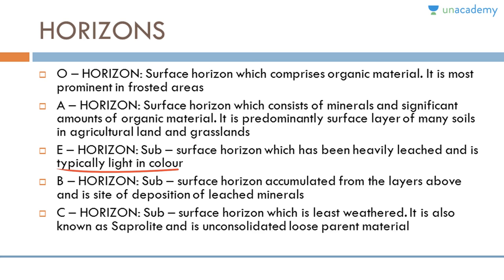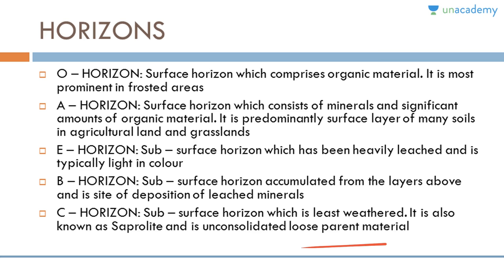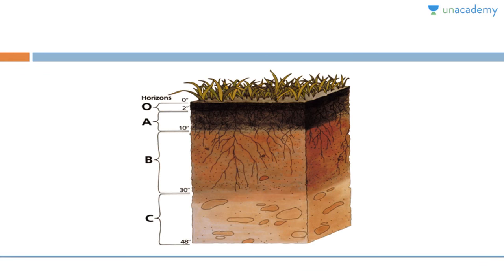The B horizon is a subsurface horizon accumulated from the layers above and is the site of deposition of leached minerals. The C horizon is also a subsurface horizon which is least weathered, known as saprolite, and is unconsolidated loose parent material. Below this lies the regolith or bedrock. In a typical soil profile diagram, we can see the O, A, B, and C horizons. The E horizon, though not always shown in figures, exists between the A and B horizons.